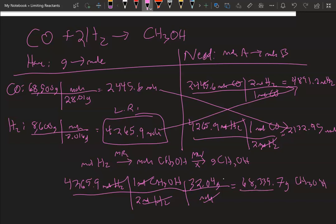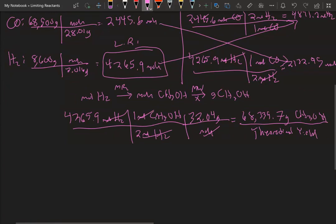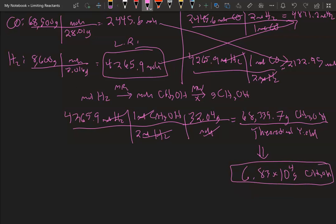Now this number here is also called the theoretical yield. Now if I were to pay attention to significant figures, this would be 3 sig figs for the final answer. So this would be where you can just simply convert it to scientific notation, which would be 6.83 times 10 to the 4 grams of CH3OH. Again, is that necessary? You could simply do 68,300 or you can do scientific notation, which either one works.